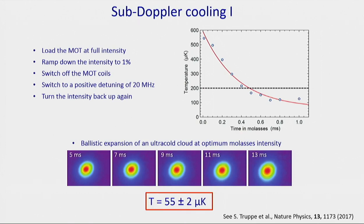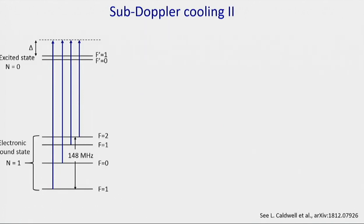This temperature is limited by the random nature of spontaneous emission, which is a heating mechanism. Ideally we'd like to turn that off, and a good way to do so is to arrange for the slowest molecules to get optically pumped into dark states so they're no longer scattering photons once they're slow enough. So the next thing we do is apply a second stage of sub-Doppler cooling.